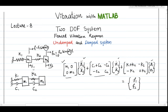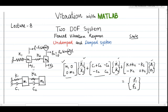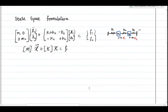In the case of forced vibration, the right-hand side will have the force vector, whereas in free vibration it was zero at both places. This is our governing equation. We are again solving the problem using the state space formulation. The first step is to convert the given system into state space form. This is a system with two masses and applied forces F1 and F2.